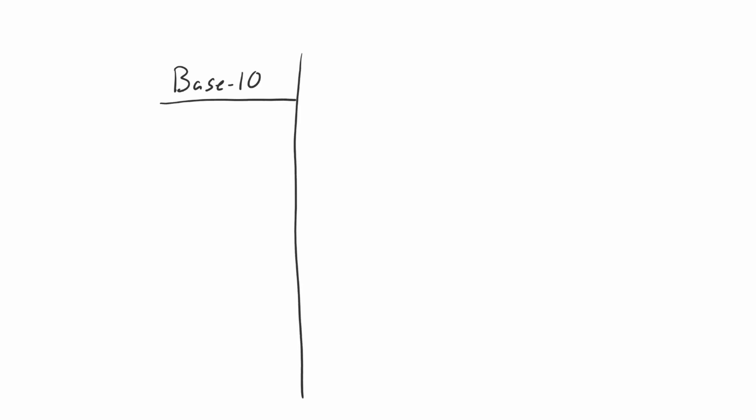The number system that we use in our everyday lives is called the decimal number system, or the base 10 number system. Let's look at something very simple about it. When we start counting we start with zero, and from there we go to 1, 2, 3, 4, 5, 6, so on until we get to number 9.